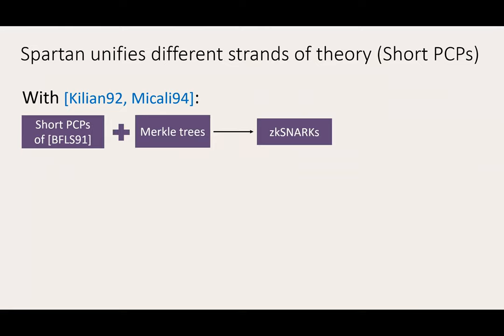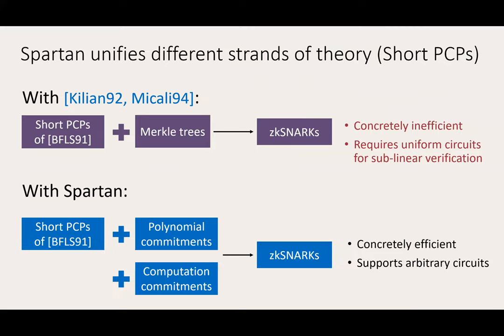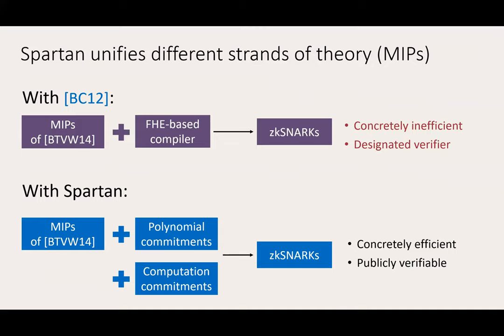For example, with the work of Killian and Micali, we can combine short PCPs of PFLS with Merkle trees to obtain ZK-SNARKs, but these ZK-SNARKs are not completely efficient and achieve sublinear verification costs only for uniform circuits. SPARTAN can be seen as a way to compile these short PCPs to ZK-SNARKs by employing more powerful cryptographic machinery — namely polynomial commitments and computation commitments — resulting in SNARKs that are concretely efficient and support arbitrary circuits. Similarly, SPARTAN can be seen as a way to compile two-prover MIPs to ZK-SNARKs; prior compilers use fully homomorphic encryption, resulting in concretely inefficient, designated-verifier proofs, whereas SPARTAN produces publicly verifiable proofs that are also concretely efficient.